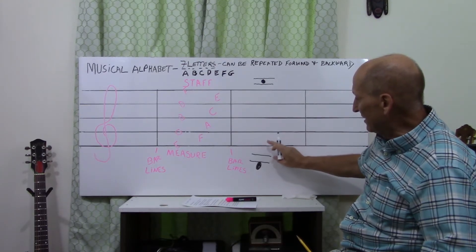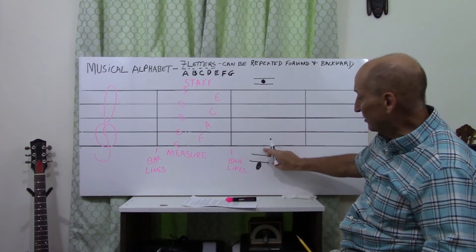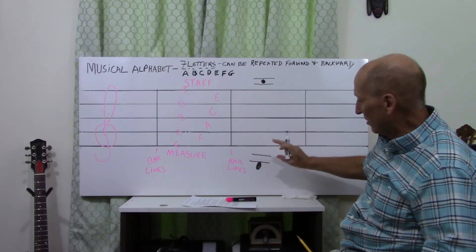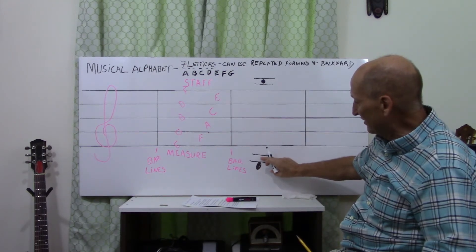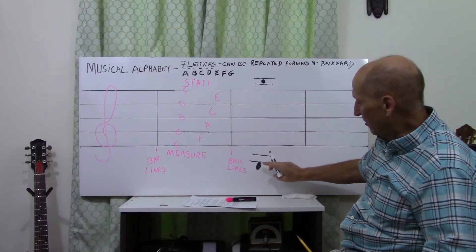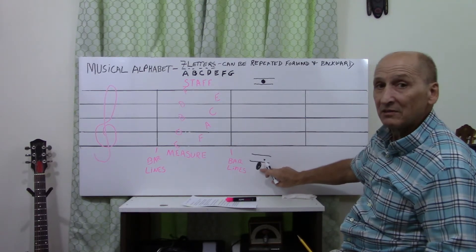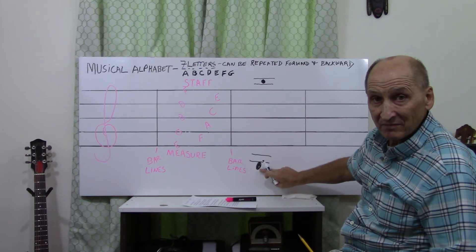F is the space. E is the line. D is the space. C is the line. B is the space. A is the line. Before A, G.